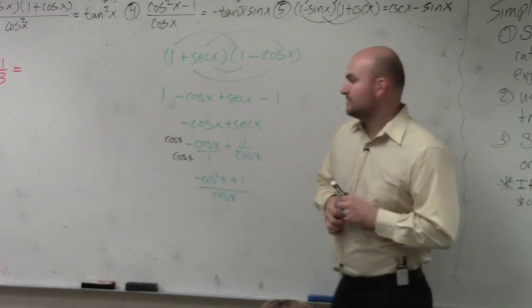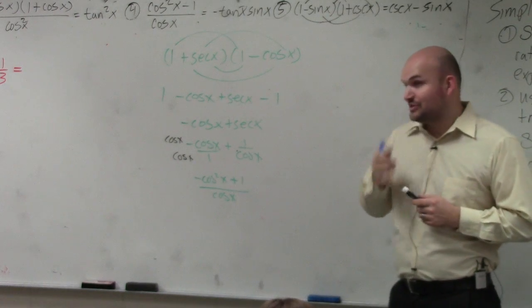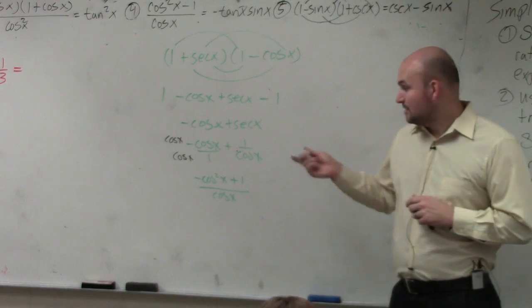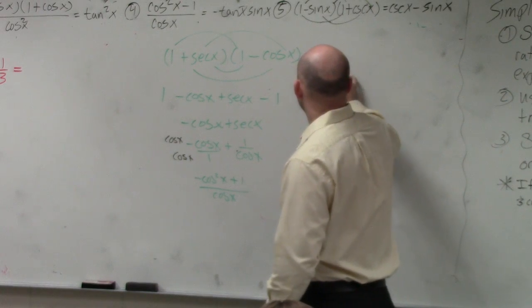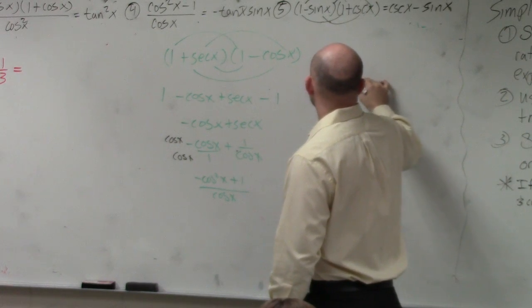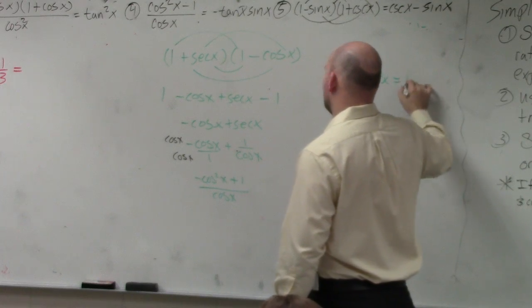I don't think that's one of those either, is it? But I could use my Pythagorean identities. And I could rewrite this. So if I have sine squared of x plus cosine squared of x equals 1...